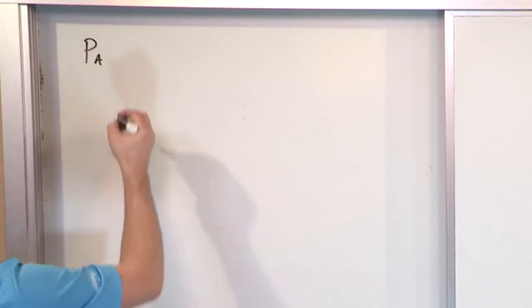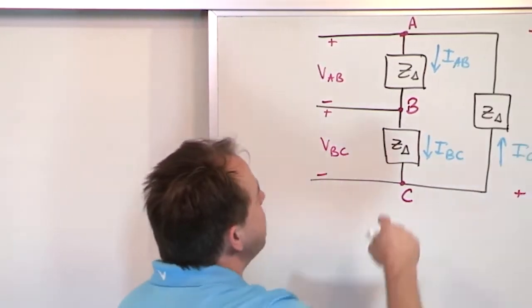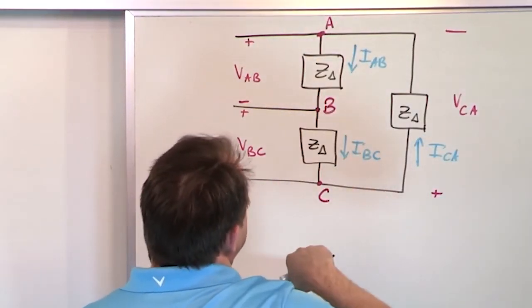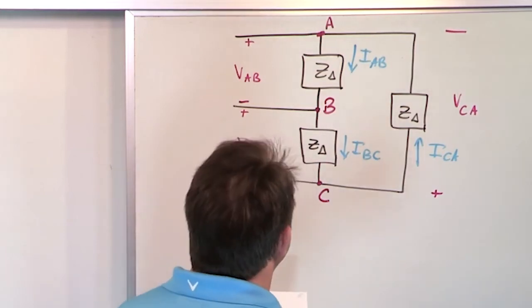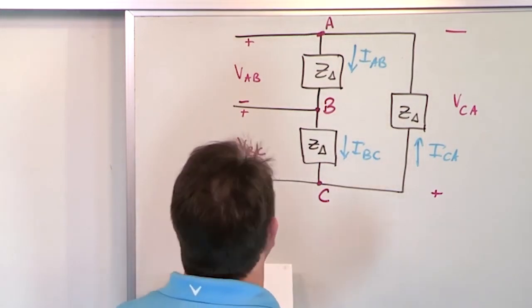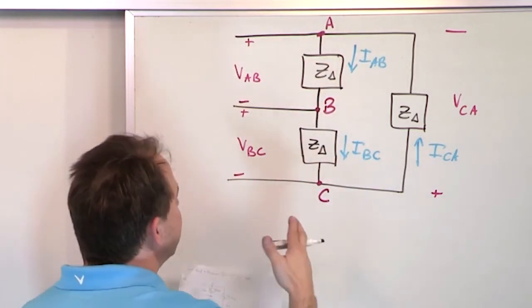So the real power on the A phase basically is the magnitude of the voltage across this A phase load times the magnitude of the current, of course, an RMS value, going through that guy, times the cosine of the difference between the voltage and current, theta V minus theta I, right?